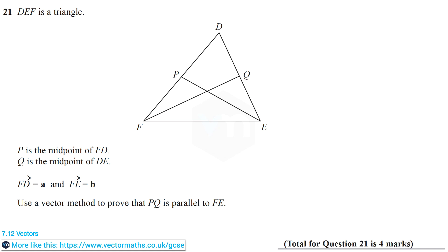In question 21, we're told that DEF is a triangle, P is the midpoint of FD, and Q is the midpoint of DE. We're also given information about the vector FD and the vector FE. We need to use a vector method to prove that PQ is parallel to FE.